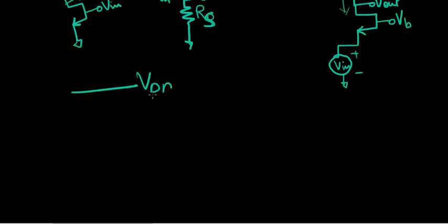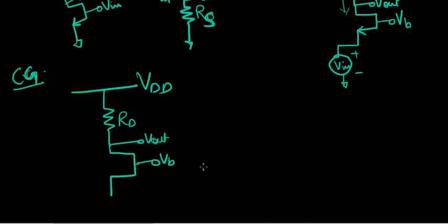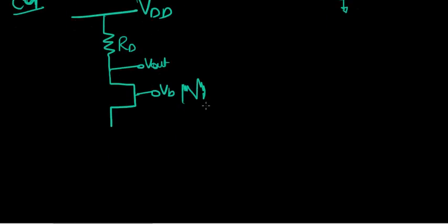So to make it practically or technically correct, this is how it looks like. So Vdd, Cg for common gate. This is Rd, Vb. This is the MOSFET with the Vb bias voltage there. And this is Vout.